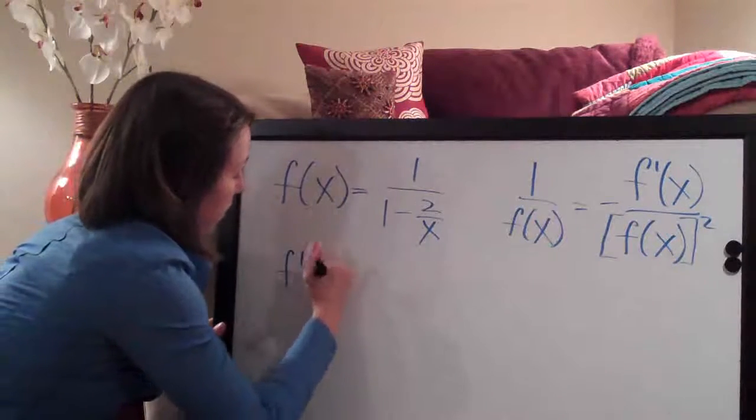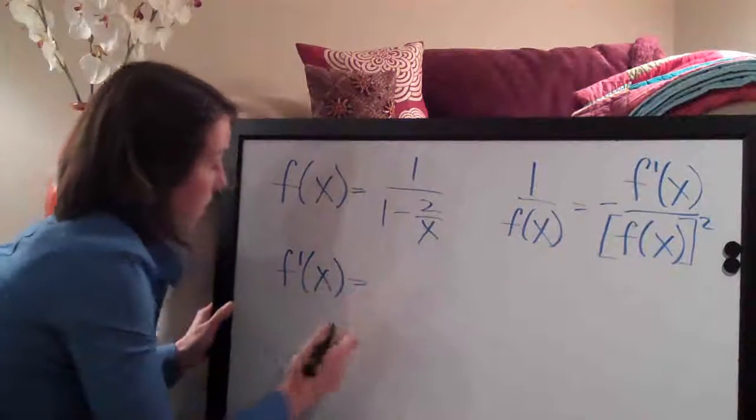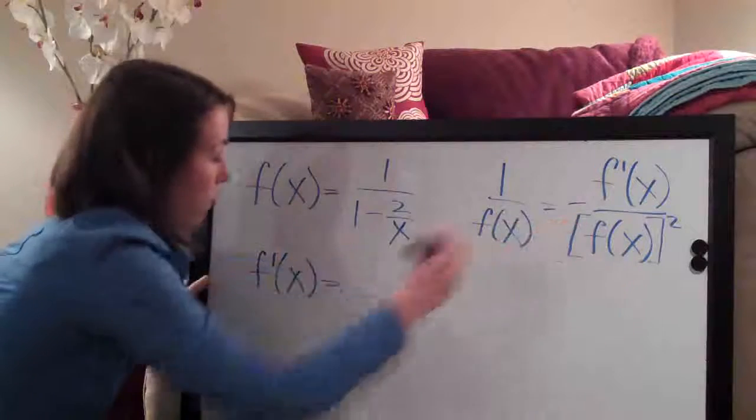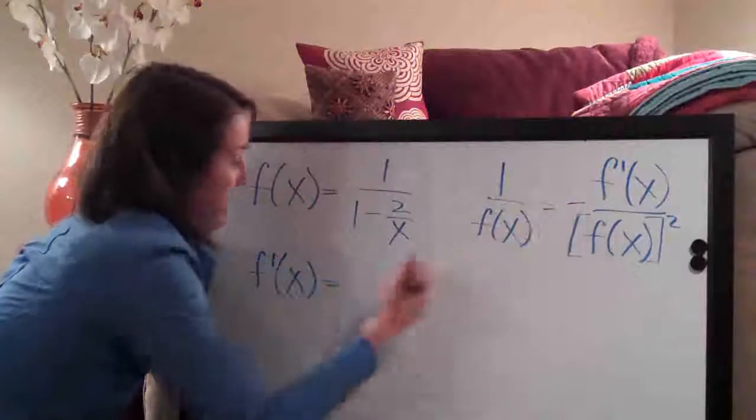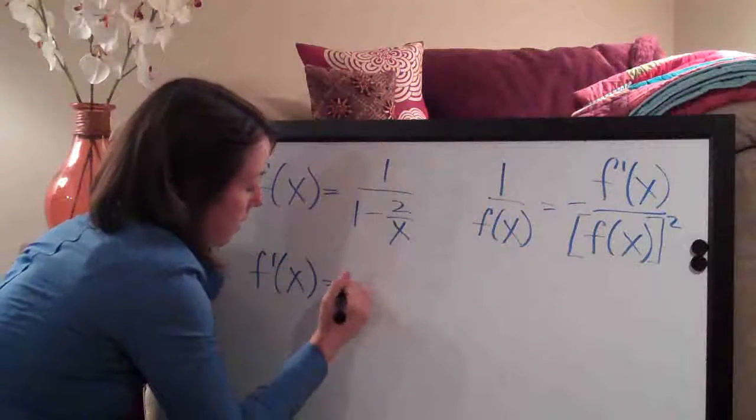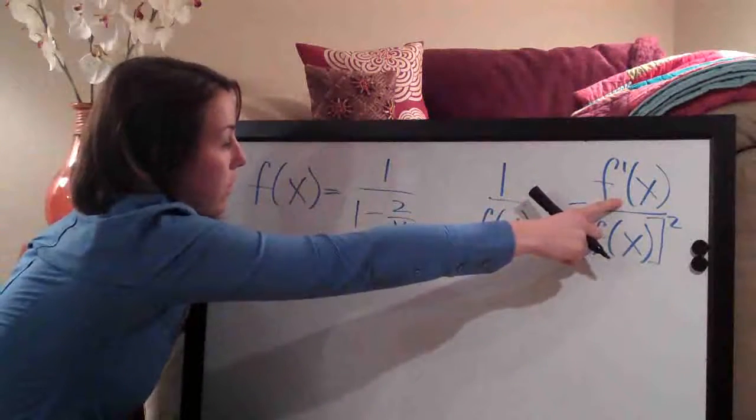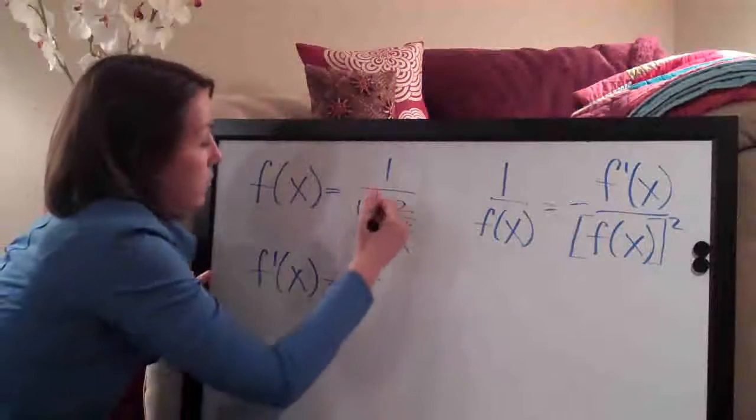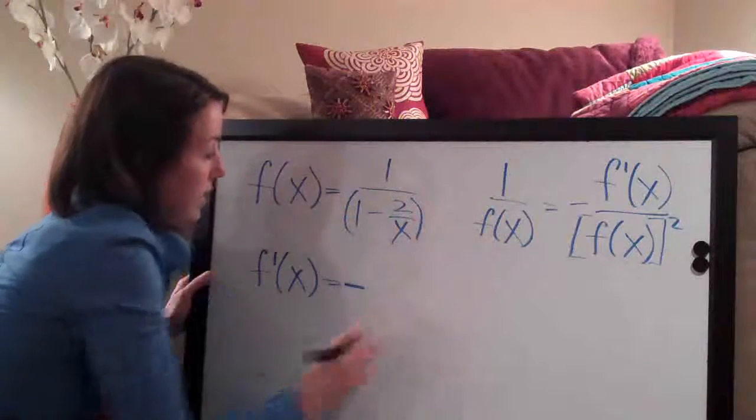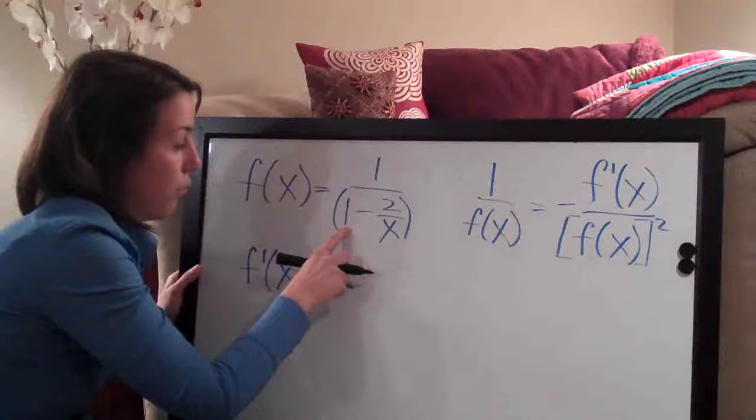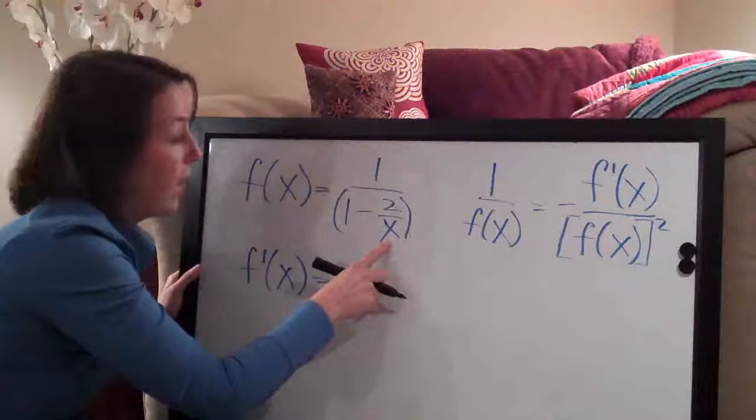So we'll say f prime, the derivative of x, is going to be, and we'll follow the rule. So we always need the negative sign here so I'm going to go ahead and write that, negative. And then we need the derivative of the function on the top. So we need to take the derivative of this right here. So we'll do this term by term, the 1 first and then the 2 over x.